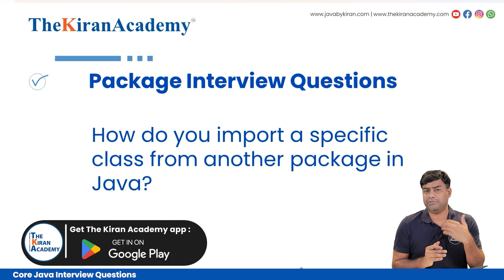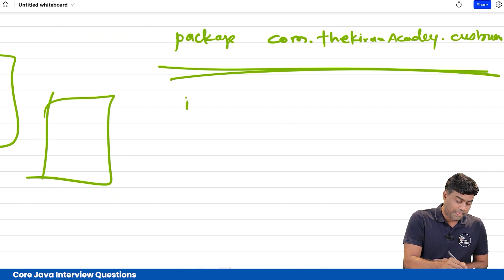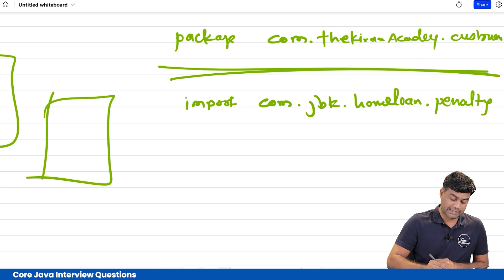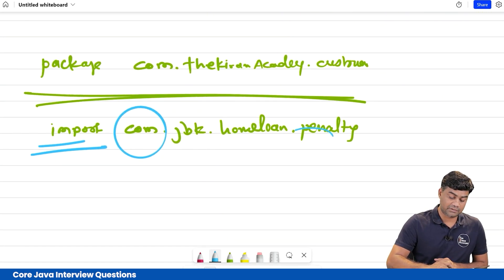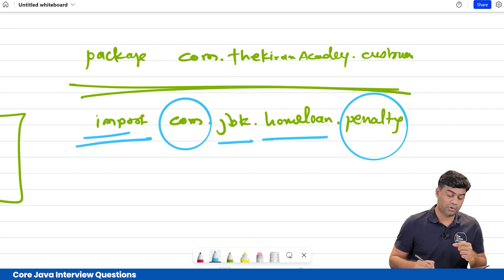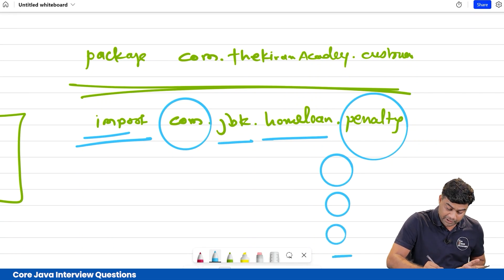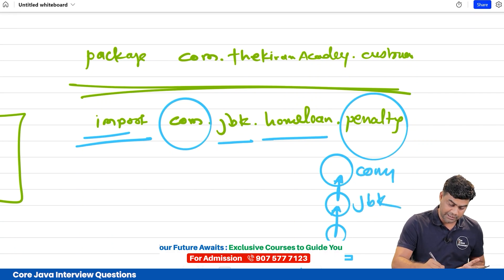Next question: how do you import a specific class from another package in Java? We need to use the import statement. For example: `import com.jbk.homeloan.penalty`. Here, at the end we have the file name. This is the root folder, this is a sub-folder of com, and this is a sub-folder of jbk. The folder structure will be: com, then jbk inside it, then home loan, and then the penalty file.